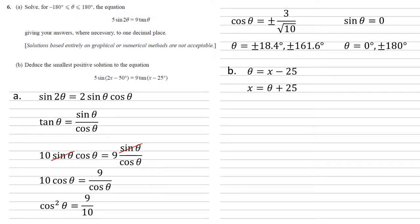If we rearrange this, we've got x equals theta plus 25, where theta is going to be one of our answers from the previous question. Now the important thing here is we want the smallest positive solution. If we look at our smallest thetas from the previous answer, we've got minus 180 degrees and minus 161.6 degrees. If we add 25 to them, they're still negative, so they're not the ones we're looking for. Our next smallest theta is minus 18.4. If we add 25 to that, it is positive. It gives us 6.6. So that is our solution.